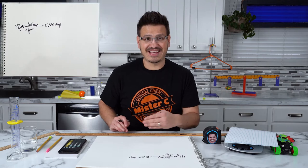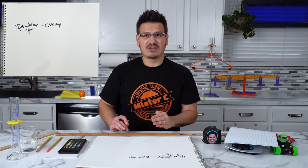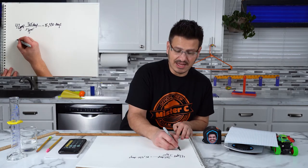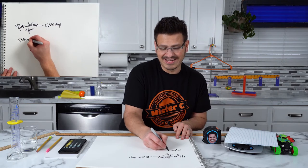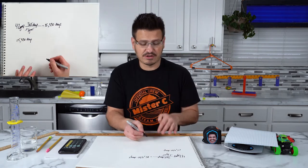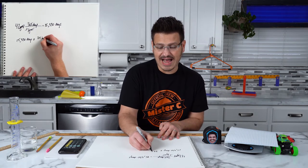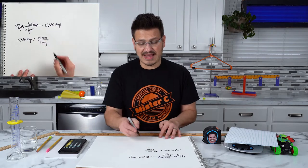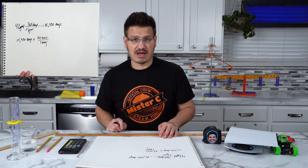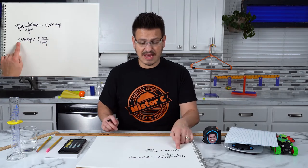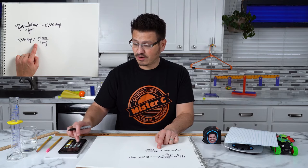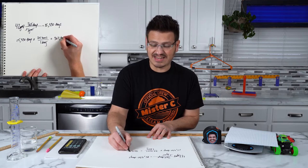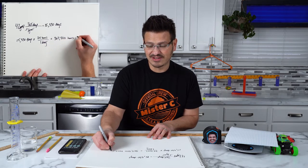Now we're going to take that and convert it further. In a day, how many hours are there? 24. So I'm going to take my 15,330 days and multiply it by a conversion factor: 24 hours in one day. The days cancel out from the numerator and denominator, so I multiply 15,330 by 24 — and I am 367,920 hours old.